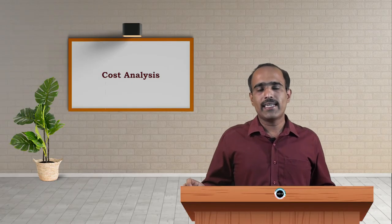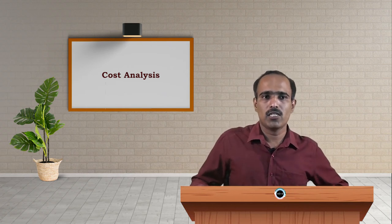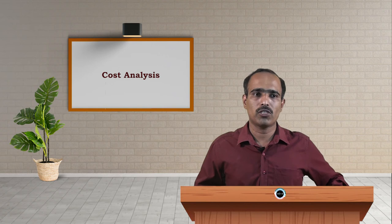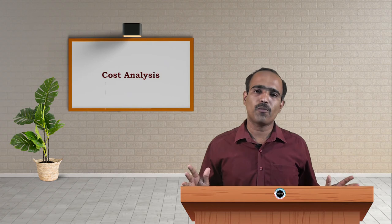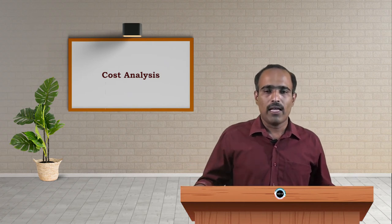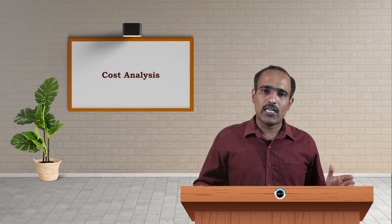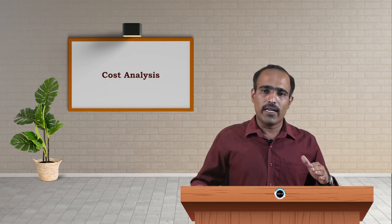Let us now move on to the determinants of cost. Cost is influenced by various determinants, also considered as independent variables of cost. The first determinant is the size of a plant — meaning the size of the industry. There exists an inverse relationship between the size of the plant and the cost: the larger the size, the lesser will be the cost, and vice versa.